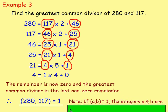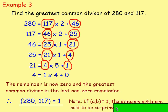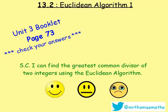Note: if the greatest common divisor of two integers works out to be 1, the integers are said to be co-prime, or relatively prime. Try some of these examples on page 73 in the Unit 3 booklet. Good luck with finding the greatest common divisor using the Euclidean algorithm. Have fun! See ya!